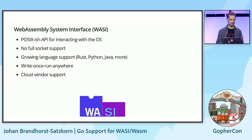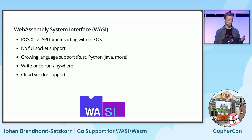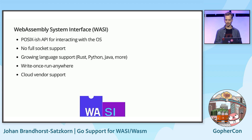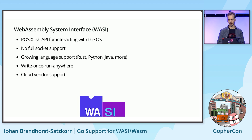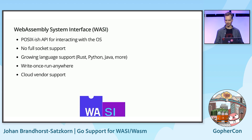Languages such as Rust, Python, Java, and others have implementations that allow compiling to WASI. This means you can write code once in these languages and run it anywhere a WASM runtime is supported. Cloud vendors like Fastly support executing WASI binaries directly on their edge, and Azure's managed Kubernetes offering supports running WASI binaries directly. But we're not here to talk about Rust or Python.